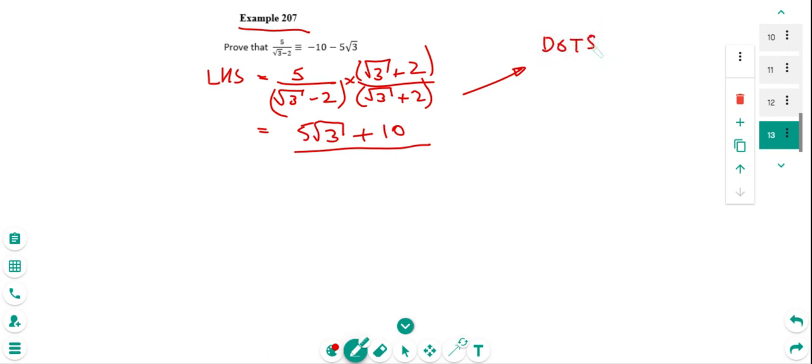as I've abbreviated it before. So difference of two squares, which is that if I've got a plus b times a minus b, then that's a squared minus b squared.